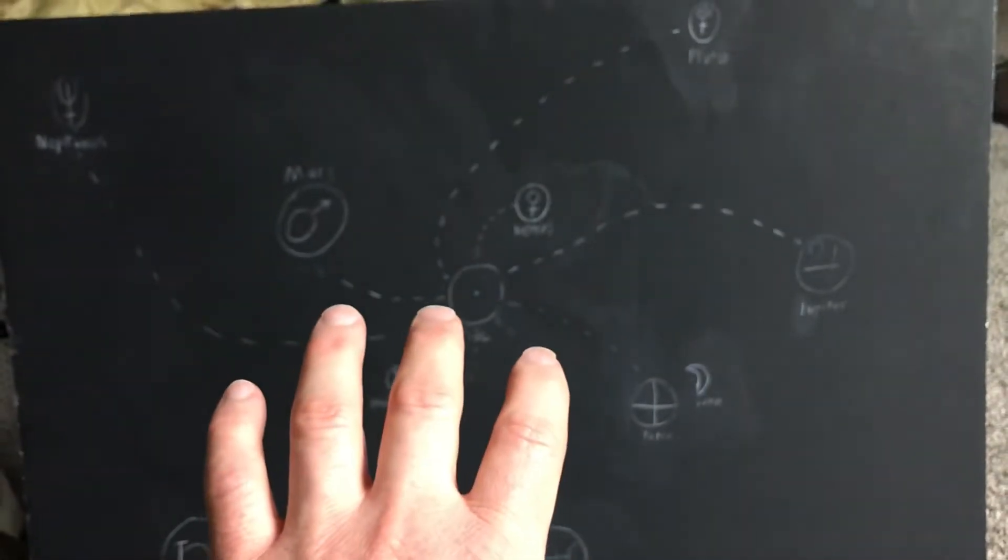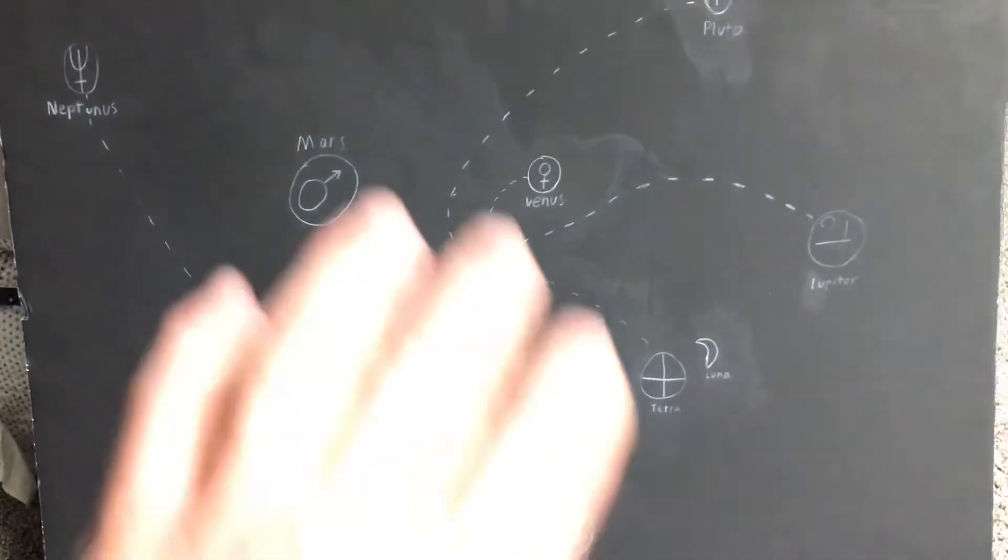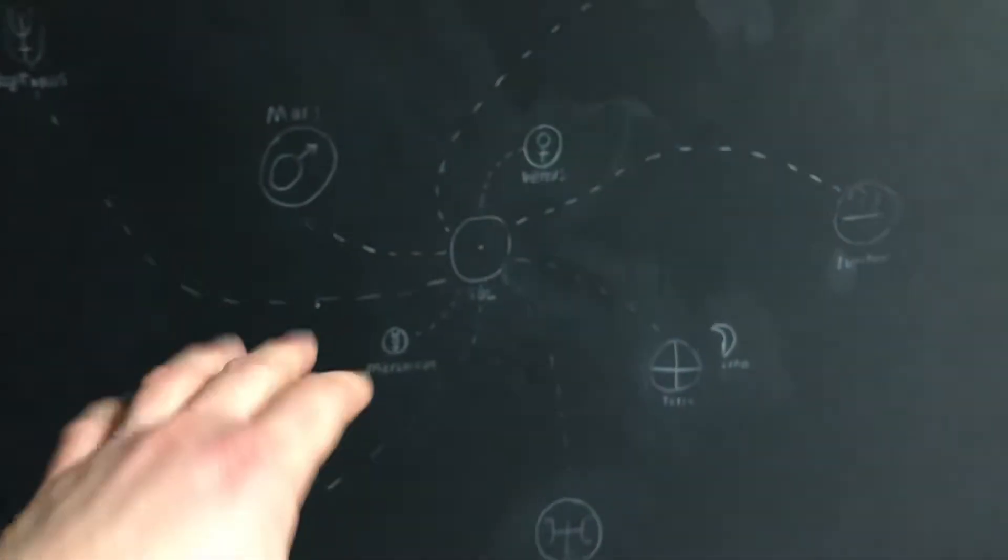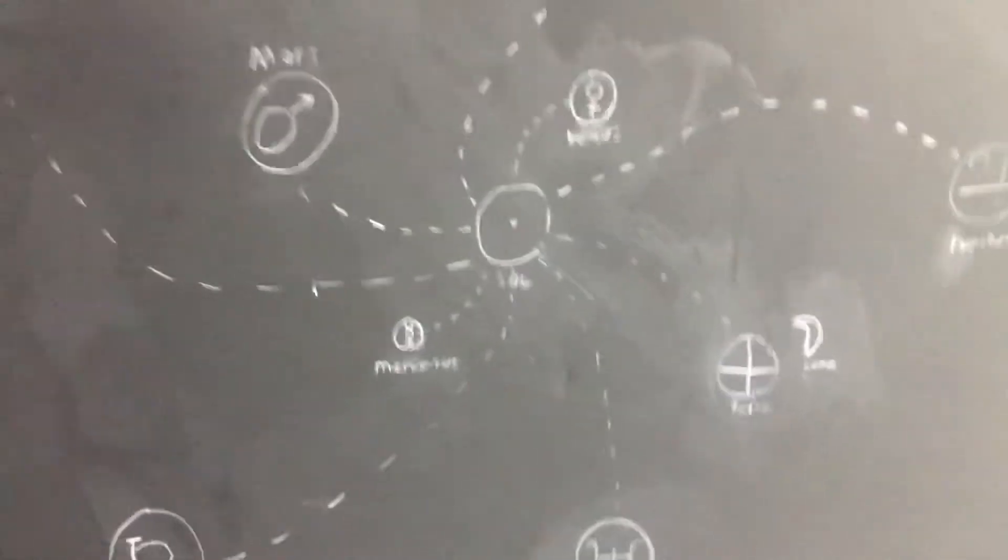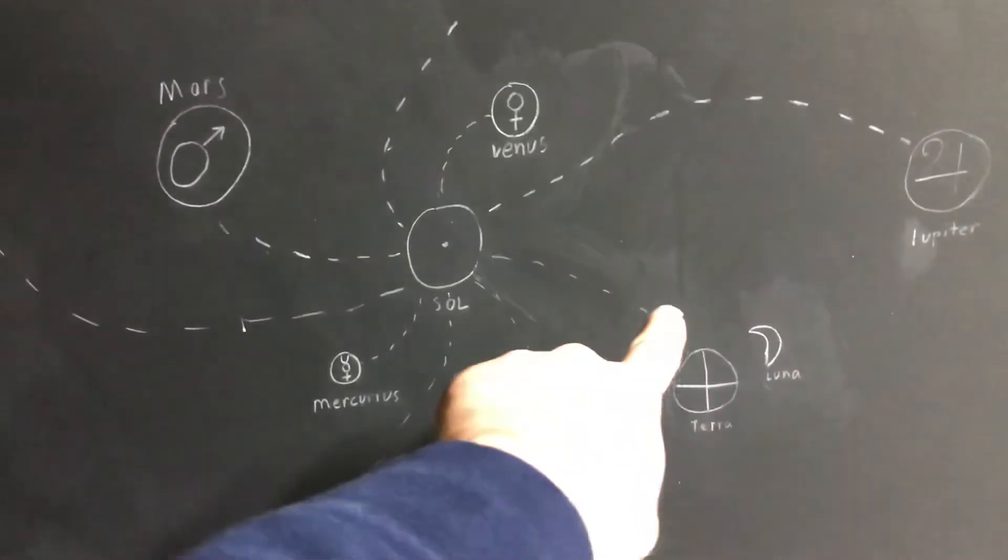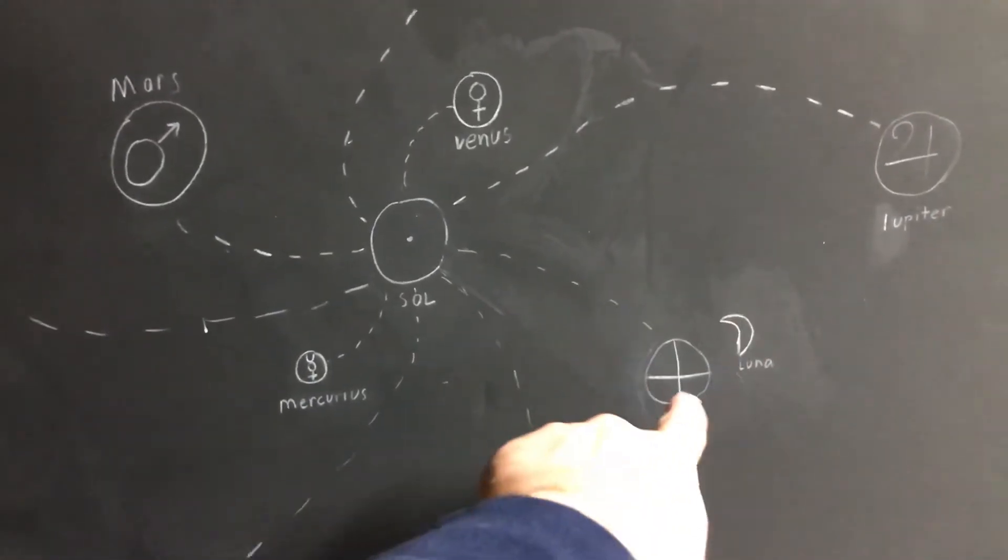Now every planet, and the stars, they all resonate. They all have a torus field. Every one of them. So earth has a magnetic field. You guys know this. You've seen this in school. We have a magnetic field going around the earth.